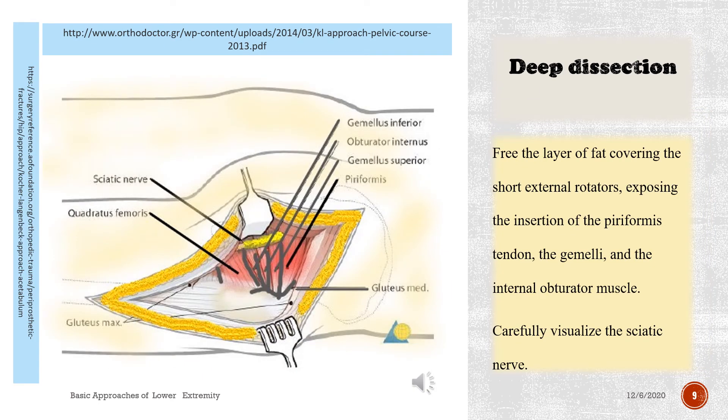Deep dissection: free the layer of fat covering the short external rotators, exposing the insertion of the piriformis tendon, the gemelli, and the internal obturator muscle. Carefully visualize the sciatic nerve.